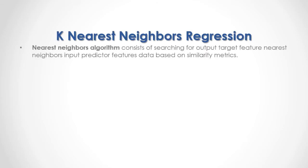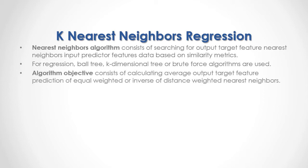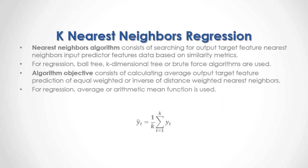The nearest neighbors algorithm consists of searching for output target feature nearest neighbors input predictor features data based on similarity metrics. For regression, ball tree, k-dimensional tree, or brute force algorithms are used. The algorithm objective consists of calculating the average output target feature prediction of equal-weighted or inverse-of-distance-weighted nearest neighbors. For regression, the average or arithmetic mean function is used. As a formula, the output target feature prediction is equal to 1 divided by k — where k is the number of nearest neighbors — multiplied by the sum from the first to the last of nearest neighbors position output target feature data.